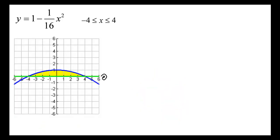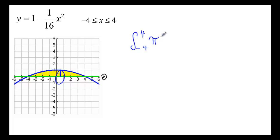Here's an example. We have the function y equals 1 minus (1/16)x² from negative 4 to 4, and we're revolving it around the x-axis. So we look at a typical slice, revolve it around, and we see the circle, and we just integrate the area of that circle. So we have the integral from negative 4 to 4 of pi times the radius squared dx. The radius is the function 1 minus (1/16)x², which is the distance from the function to the axis, and the axis is at 0. That's all there is to it.